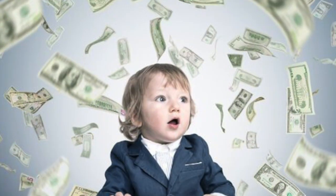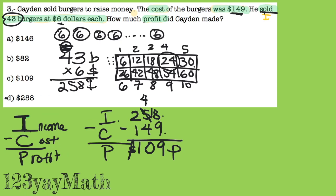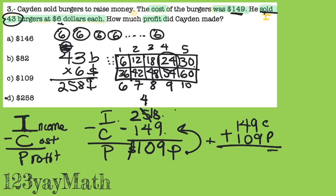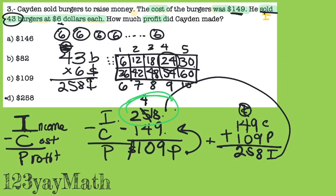He should invite us all to have lunch! And how do I know if this is correct? I'm going to add cost plus profit and I should get the income — remember, you need to prove your work. So $149 plus $109 should give me $258. 9 plus 9 is 18, carry the 1. 4 plus 1 is 5, plus 1 is 6. 1 plus 1 is 2. Yes, it is the same — so I know that $109 is the correct answer.